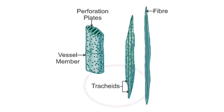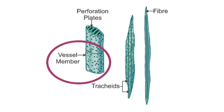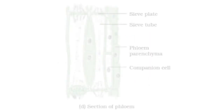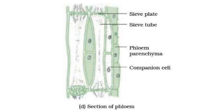In detail: tracheids are long, narrow cells that help conduct water from the roots to different parts of the plant. Vessels have a tubular structure and help in conduction of water and minerals. Xylem parenchyma stores food; xylem fiber gives mechanical strength and support. Sieve tubes are tubular cells with perforated walls that conduct food from the leaves to different parts of the plant. Companion cells surround and control the sieve tubes. Phloem parenchyma stores food, and phloem fiber gives mechanical strength and support.